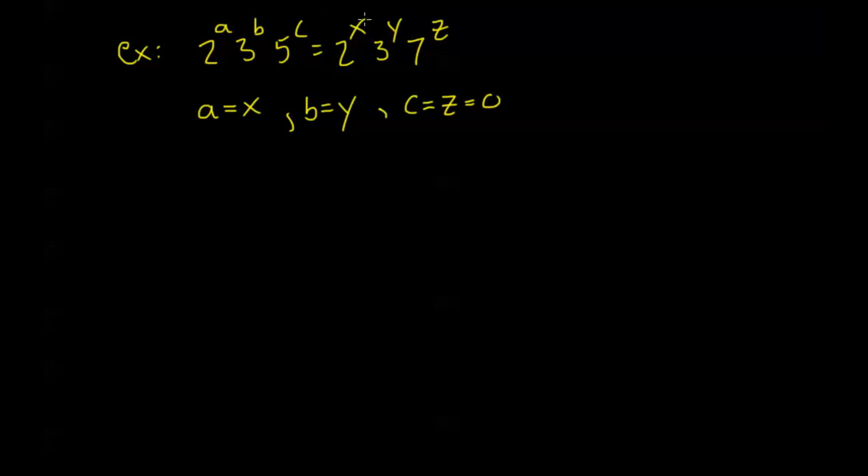So we kind of use the fundamental theorem of arithmetic in order to infer some of these properties of the numbers by just looking at some of these factorizations. We know that these prime factors give us more information about a number. So this leads us to another kind of cool result. We can write this as a theorem. There are infinitely many primes.